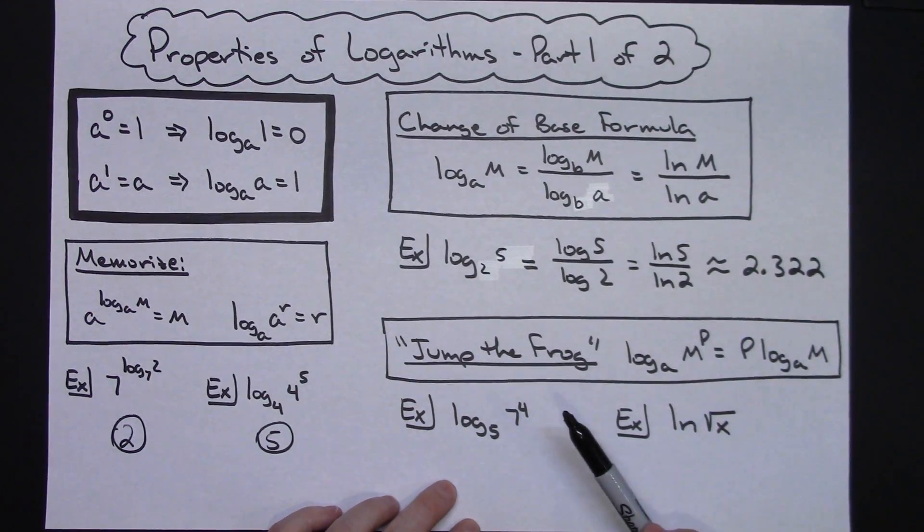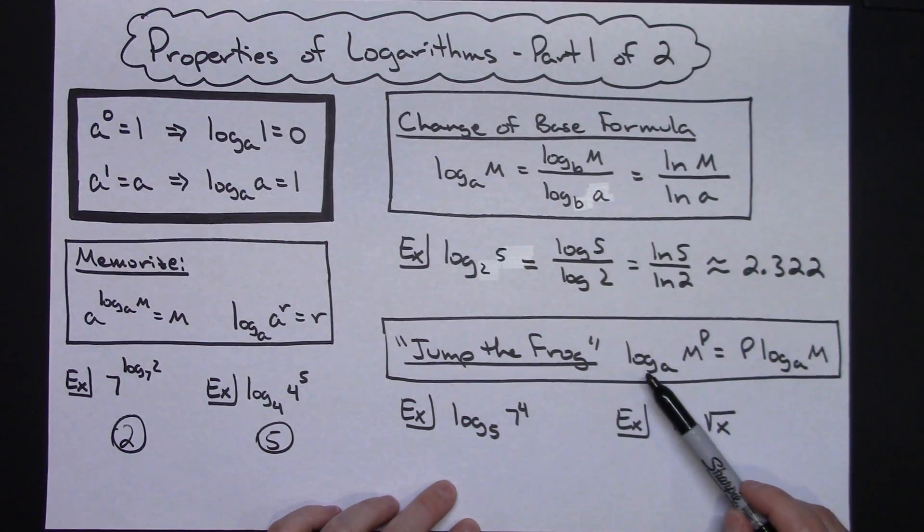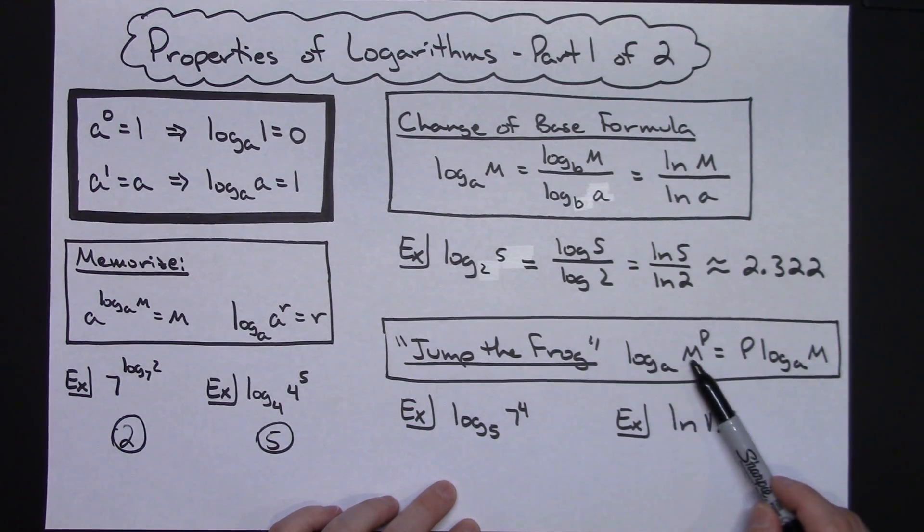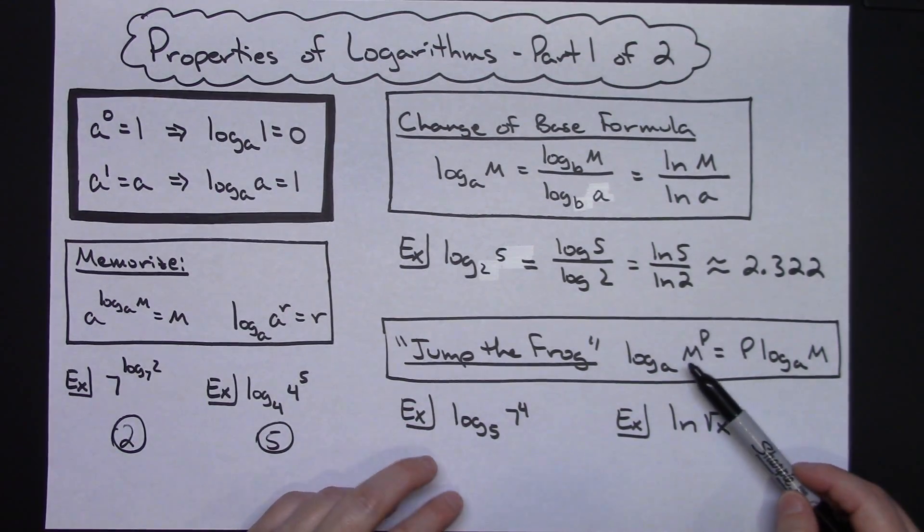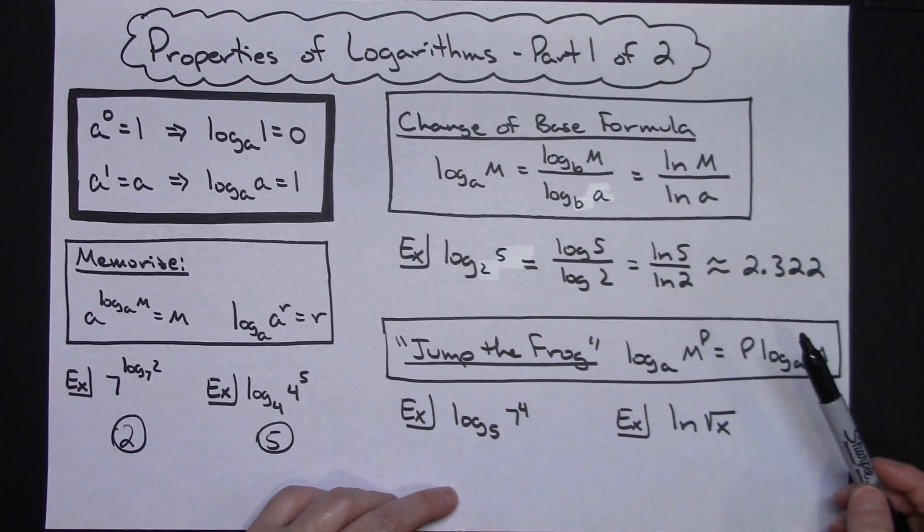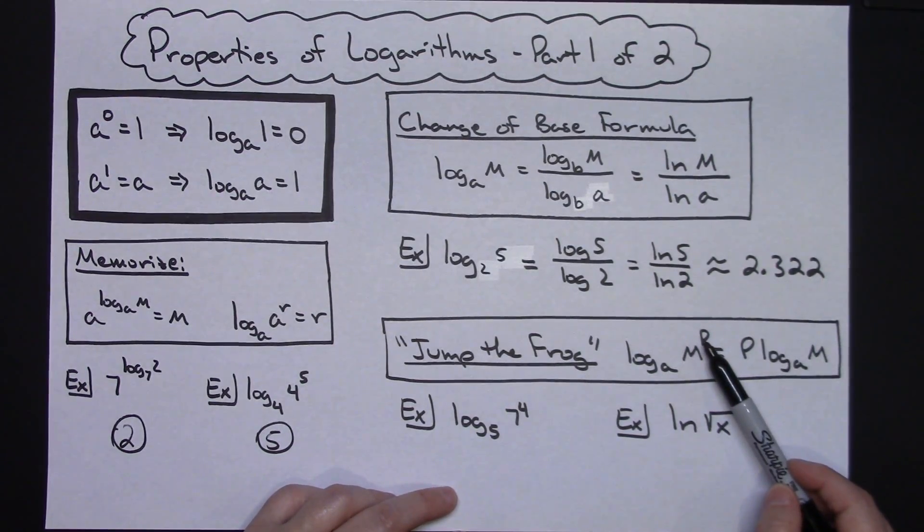Now for the last one in this first short video I'm going to do, I call it the jump the frog rule. I think most textbooks usually call it a product rule, but this is a log. So imagine a log floating out in a river, and it's got a little frog sitting on it and he's sunning himself when he gets too hot.